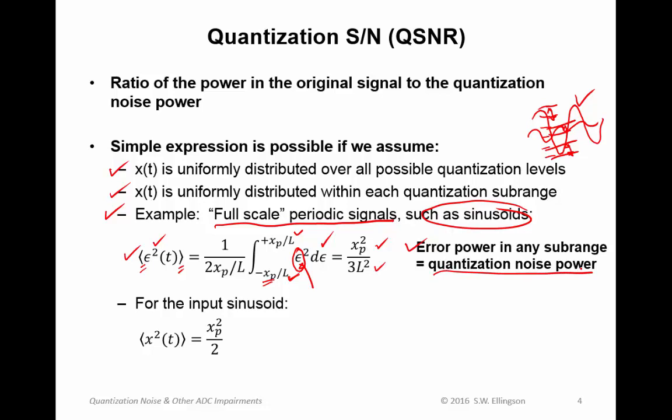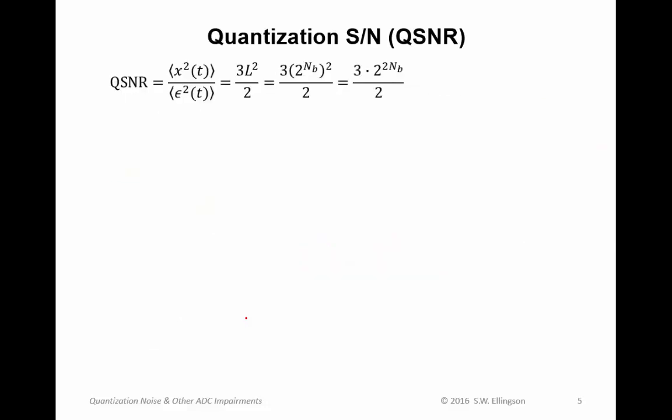So the simple integral turns out to be x_p, the magnitude of the sinusoid, squared, divided by 3 times the number of sub-ranges squared. And this is the error power in any sub-range. Now for the signal part, that's just the average of x squared, which is simply, for a sinusoid, just the magnitude of the sinusoid squared divided by 2.